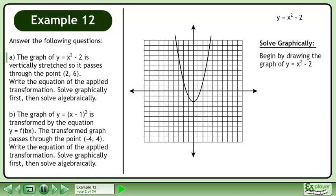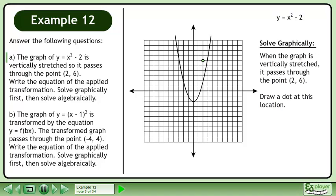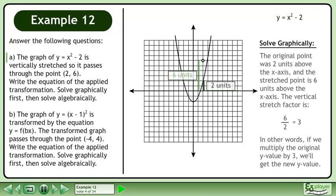Begin by drawing the graph of y equals x squared minus 2. When the graph is vertically stretched, it passes through the point. Draw a dot at this location. The original point was 2 units above the x-axis, and the stretched point is 6 units above the x-axis. The vertical stretch factor is 6 divided by 2, which is 3.